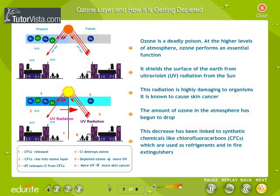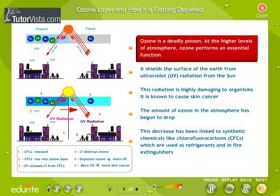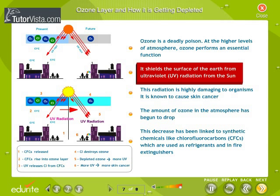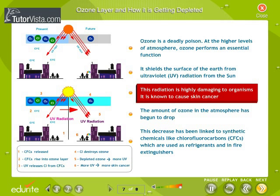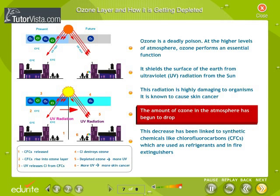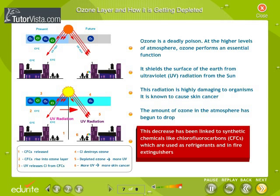Ozone layer and how it is getting depleted. Ozone is a deadly poison, but at the higher levels of the atmosphere, ozone performs an essential function — it shields the surface of the earth from ultraviolet radiation from the sun. This radiation is highly damaging to organisms and is known to cause skin cancer. The amount of ozone in the atmosphere has begun to drop. This decrease has been linked to synthetic chemicals like chlorofluorocarbons (CFCs), which are used as refrigerants and in fire extinguishers.